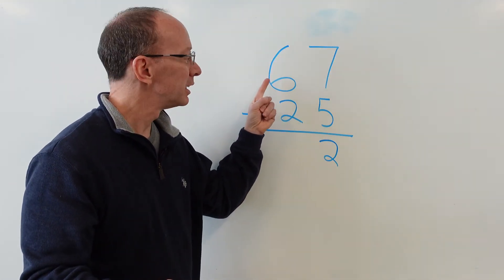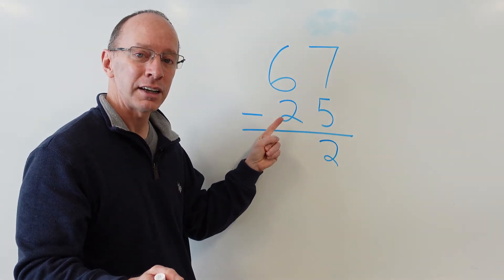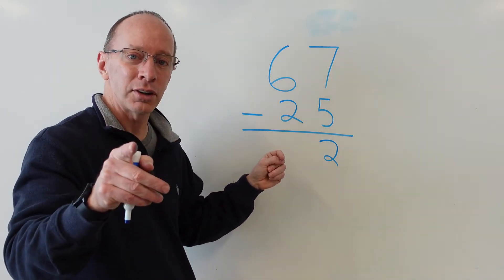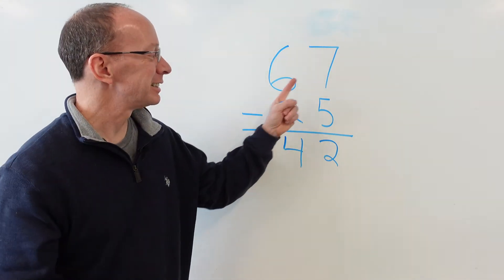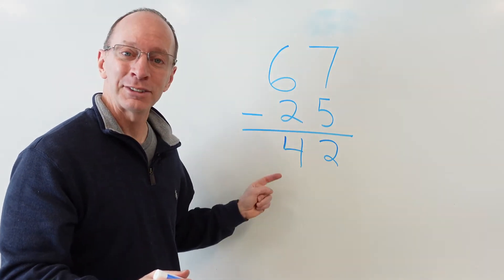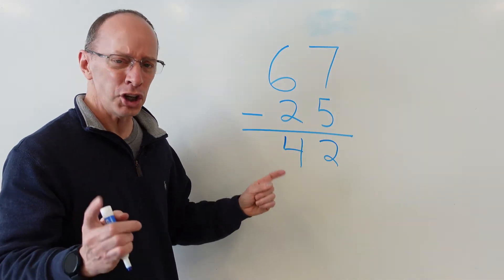Now we subtract 6 minus 2. What is that? Uno, dos, tres, cuatro. Very good. 4. 67 minus 25 equals 42. Let's do one more. Yeah!